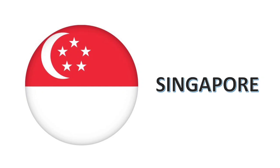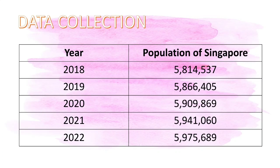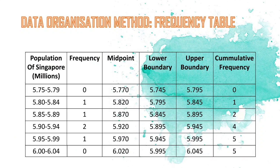The second country is the population of Singapore. The data collection is from 2018 to 2022. The right-hand side shows the population of Singapore over these five years. The frequency table includes population of Singapore in millions, frequency, midpoint, lower boundary, upper boundary, and cumulative frequency.